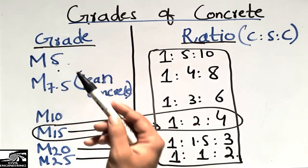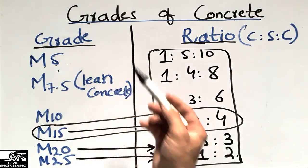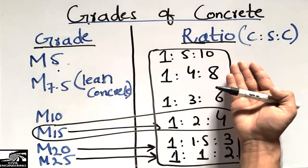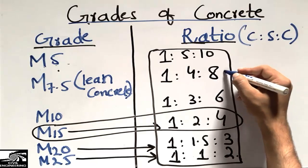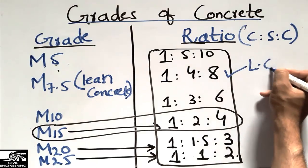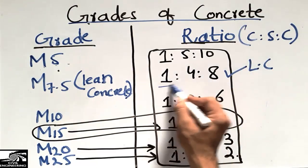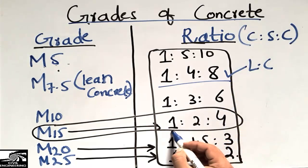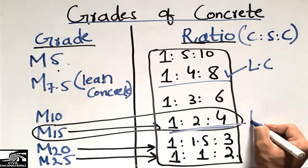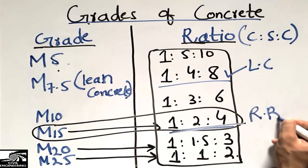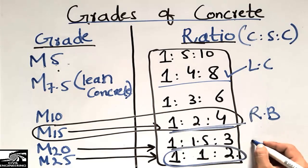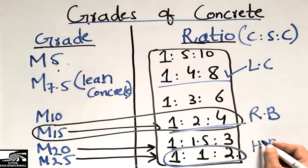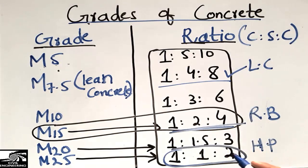Lean concrete is used for the smoothing of surfaces. M15-range concrete is used in residential buildings. Higher-grade concrete is used in heavy projects such as multi-story buildings, bridges, and flyovers.